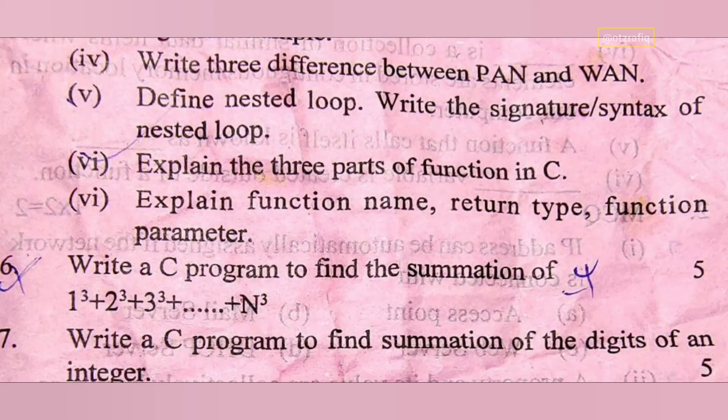Explain three parts of a function - the three parts will be function declaration, then function call, and function definition. Explain function name, return type, and parameter. Function name is the name of the function, and return type: the function must return some value, this is called return type. If the function does not return anything then we write it as void. And function parameter: the input for the function or the value that we want to pass through a function is known as function parameters.